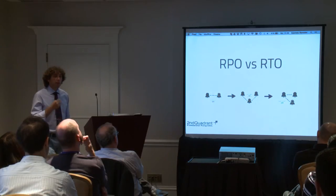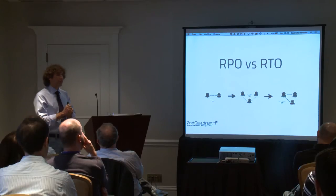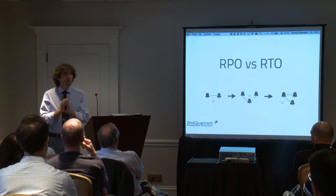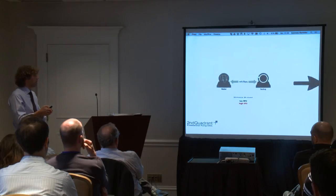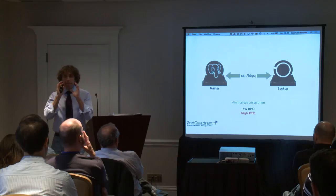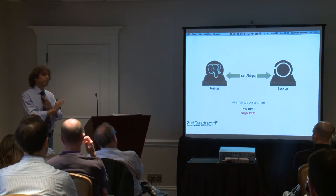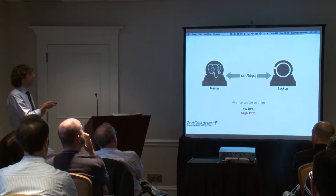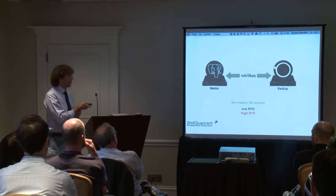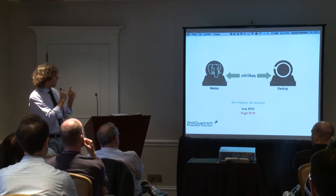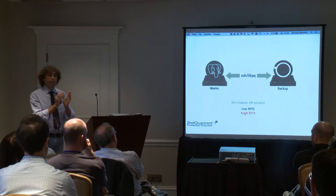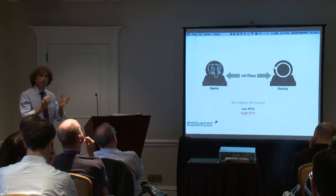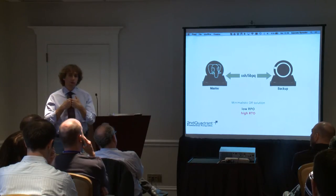When we talk about disaster recovery, we must introduce two main metrics: RPO (recovery point objective) and RTO (recovery time objective). In the most simple scenario, you have a master server and a backup server. In terms of recovery point objective — the amount of data you can afford to lose — we already have a quite optimal value for the majority of cases.